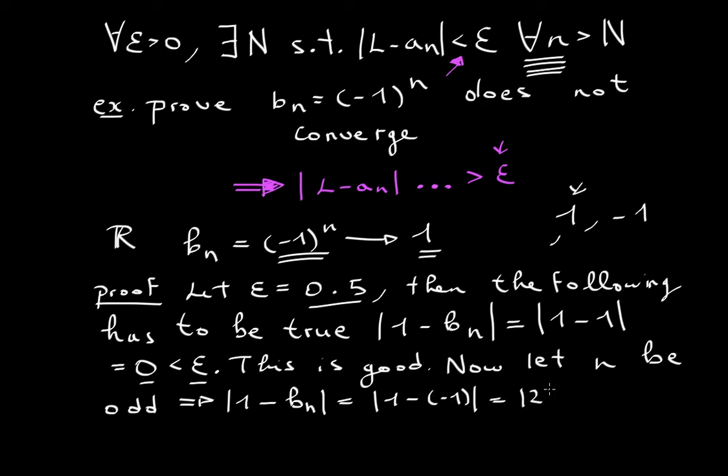This should be less than epsilon. I'm just going to put a question mark. Is this less than epsilon? At the starting of our proof, we chose our epsilon to be 0.5. Is 2 less than 0.5? Is this true? No, it isn't.